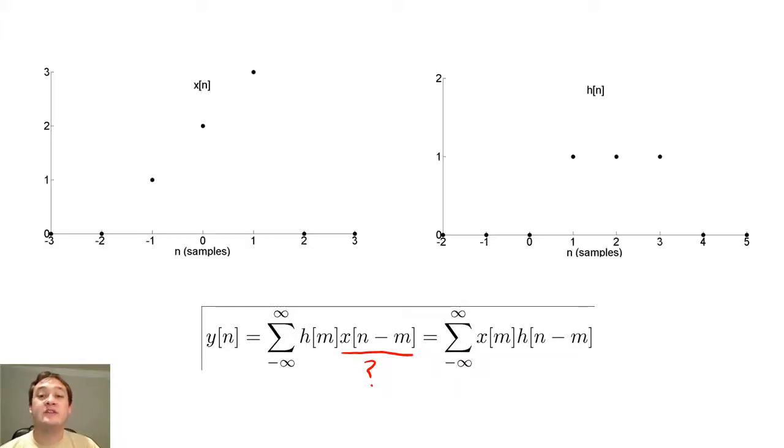To answer this question, let's look at an example. Remember, sample 0 is what we are about to analyze in our system. The negatively indexed samples are samples we collected before sample 0, and the positively indexed samples are samples we will collect later.